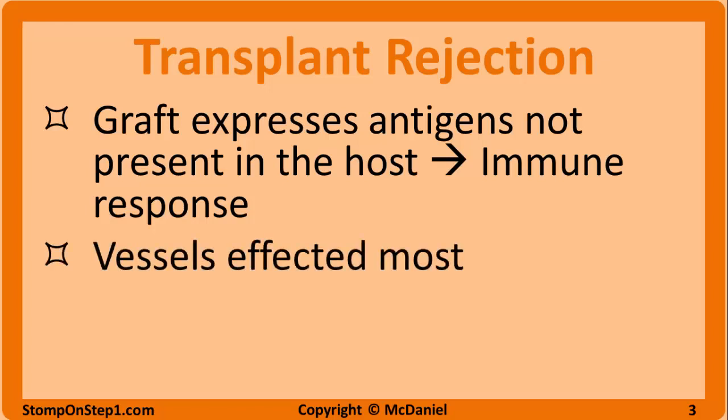During transplant rejection, the damage is often most evident in the vessels of the donated tissue. This should be intuitive because the vessels in the graft are the interface between the donated tissue and the recipient. The graft antigens lining the endothelium come into constant contact with the immune cells circulating in the host's blood. The damage to the vessels can present with everything from mild fibrosis to very severe hemorrhage.